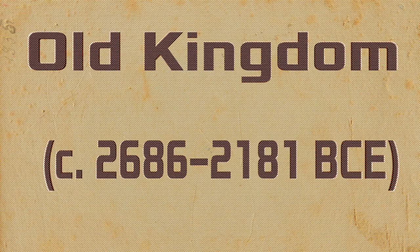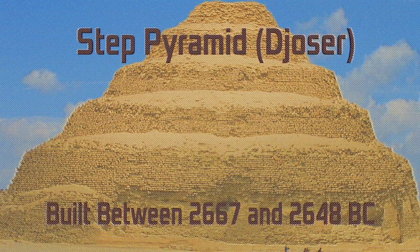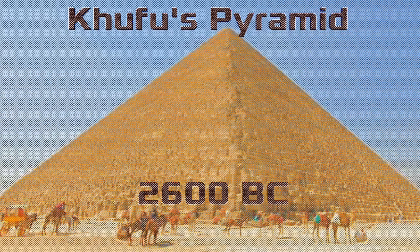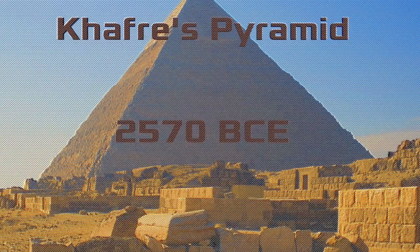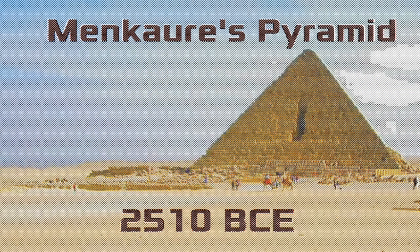In the Old Kingdom, from roughly 2686 to 2181 BCE, monumental pyramids became the hallmark of Egyptian tomb architecture. Pharaohs such as Khufu, Khafra, and Menkaura commissioned these colossal structures as eternal resting places and symbols of their divine authority.